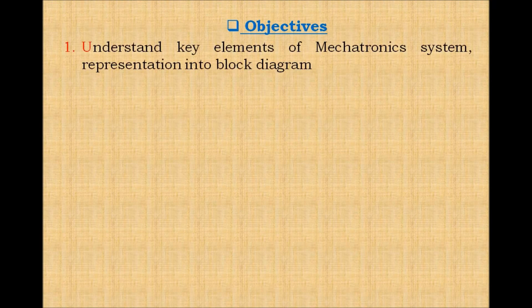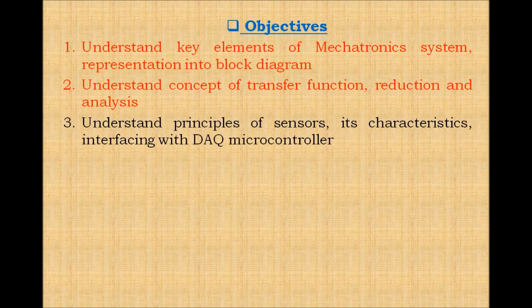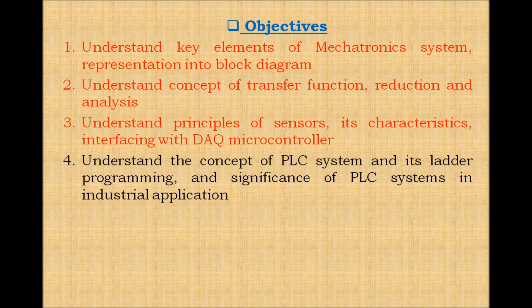The first objective is to understand key elements of a mechatronics system and their representation in block diagram form. The second objective is to understand the concept of transfer function, reduction and analysis. The third objective is to understand the principles of sensors, their characteristics, and interfacing with microcontrollers. The fourth objective is to understand the concept of PLC systems and their ladder programming, and the significance of PLC systems in industrial applications.